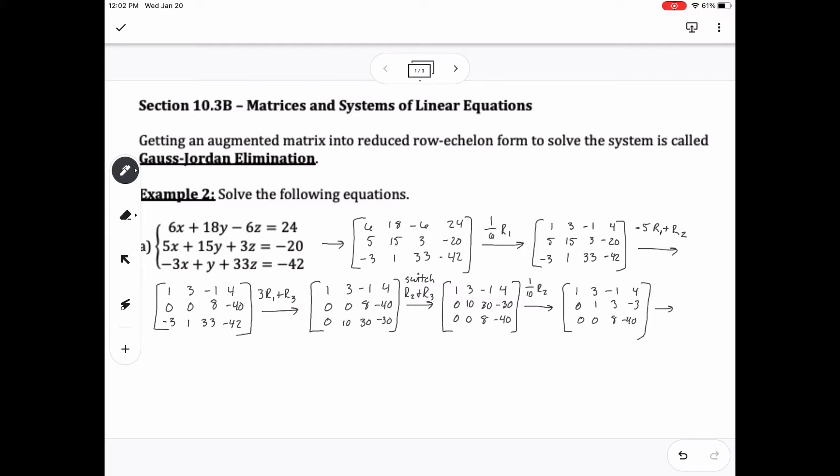Essentially, when you're doing reduced row echelon form here, you're essentially getting the first entry of the top left corner to be a 1, and everything below it to be a zero. The middle row, the second column, needs to be a 1, and the number above and below need to be a zero.